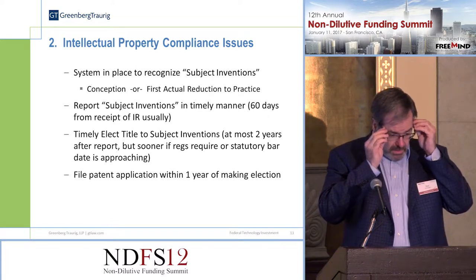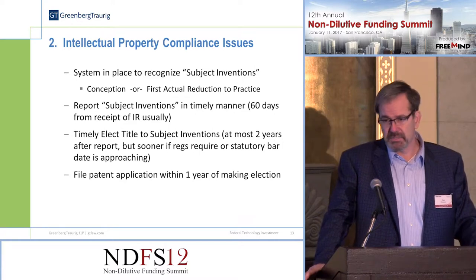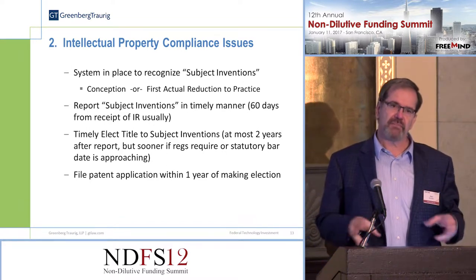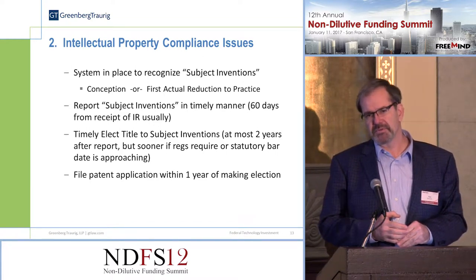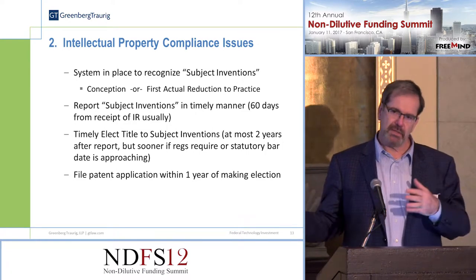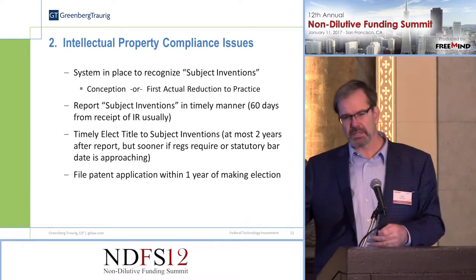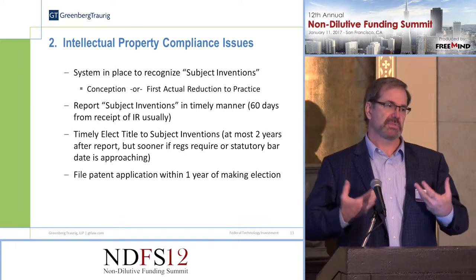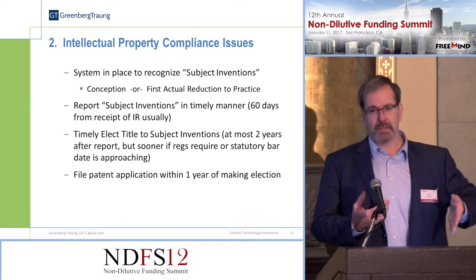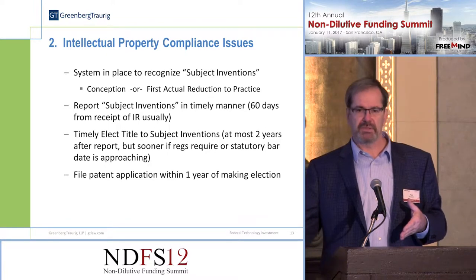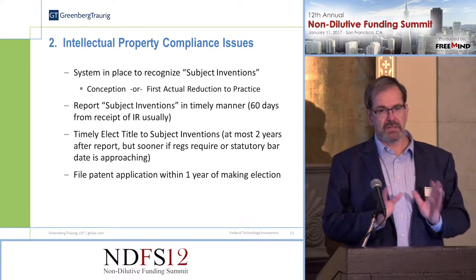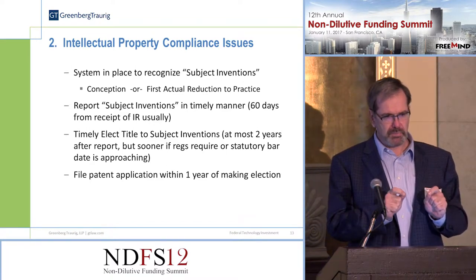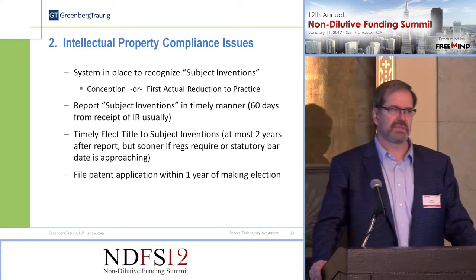If you do have a subject invention, you have obligations to report it to the government. There are now electronic systems like iEdison for notifying the government - usually within 60 days from when the person in your organization who handles patents is aware of it. This is important because it starts the clock ticking on other obligations, like your title ownership, which is derived from an actual election of title - you affirmatively declare that you're going to elect title to it. Then there's an obligation to file a patent application within a certain period of time. All of that seems innocuous and it is - not very draconian - but there are things that can happen if you aren't in compliance or don't have somebody watching to make sure this gets done.